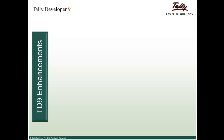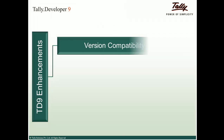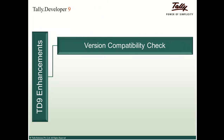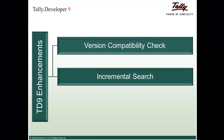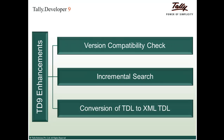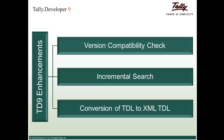This video will take you through the major enhancements in Tally Developer 9, which are: Version Compatibility Check, a functionality that aids in easier migration of customization from a lower release to a higher one; Incremental Search, an improvised search option that suggests the progressive match when the user begins to type characters in the incremental search box; and Convert to XML TDL feature, which converts the required TDL code to XML format.